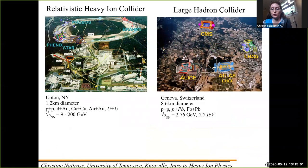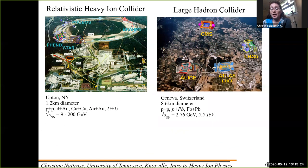There are two main places in the world where we do this. One is the Relativistic Heavy Ion Collider (RHIC) in Upton, New York, and the other is the Large Hadron Collider (LHC). RHIC is more versatile — it can collide more different particle species and covers about two orders of magnitude in collision energy. The LHC mainly focuses on lead-lead collisions, though it has moved to smaller systems as well, and it focuses on the highest energy collisions we can make.